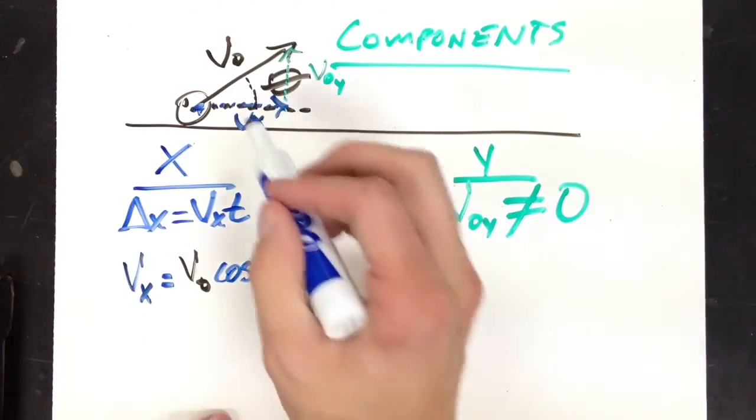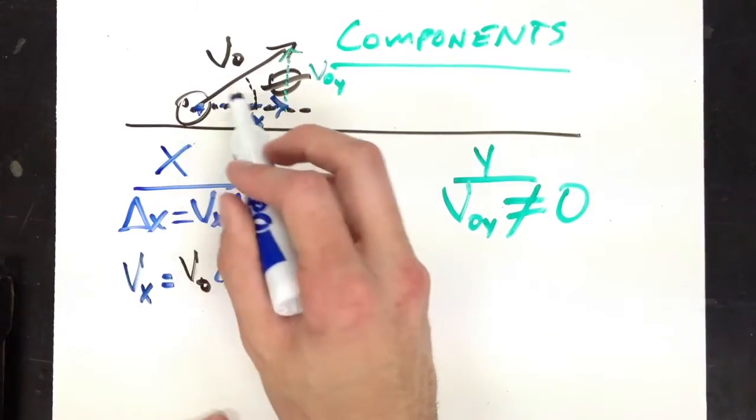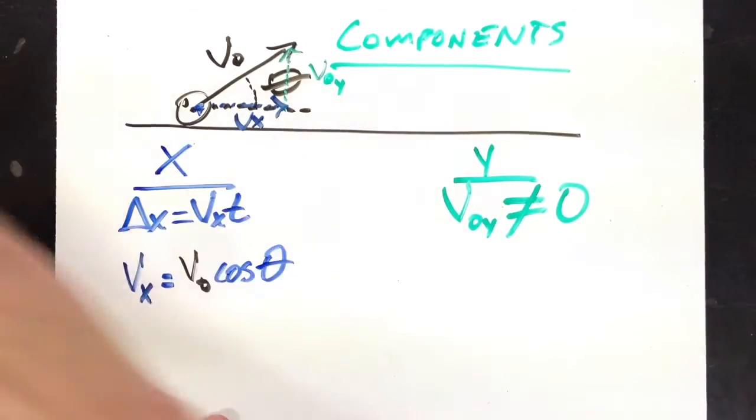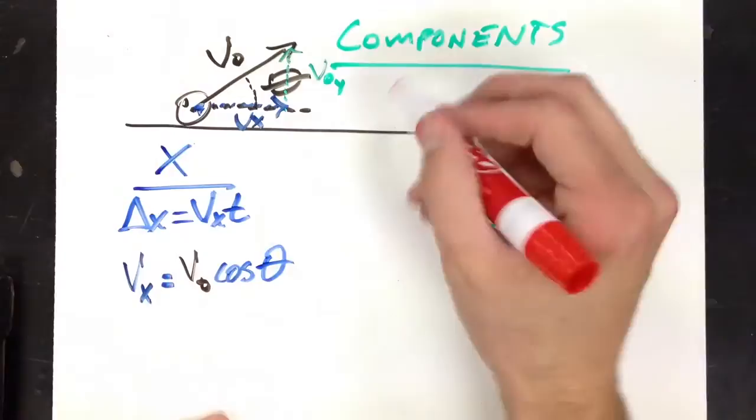Why cosine? Well, this side of the triangle is the adjacent. And ever so useful when you're dealing with components is knowing your trig identities.